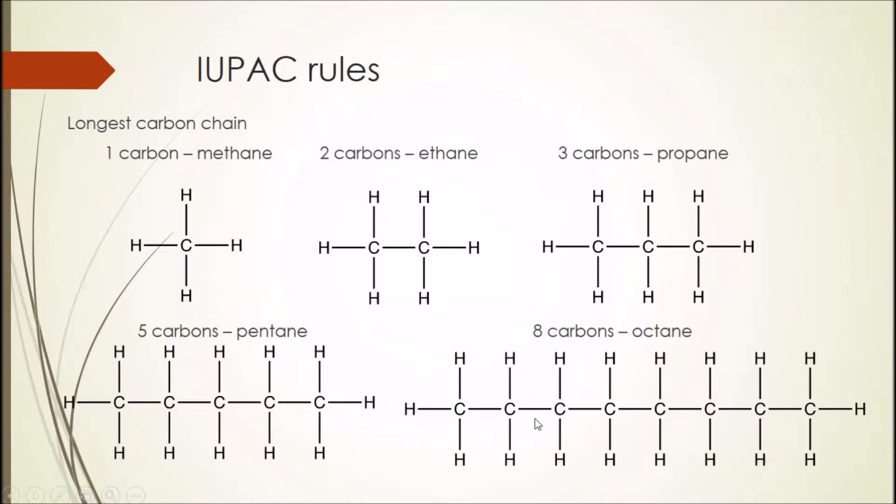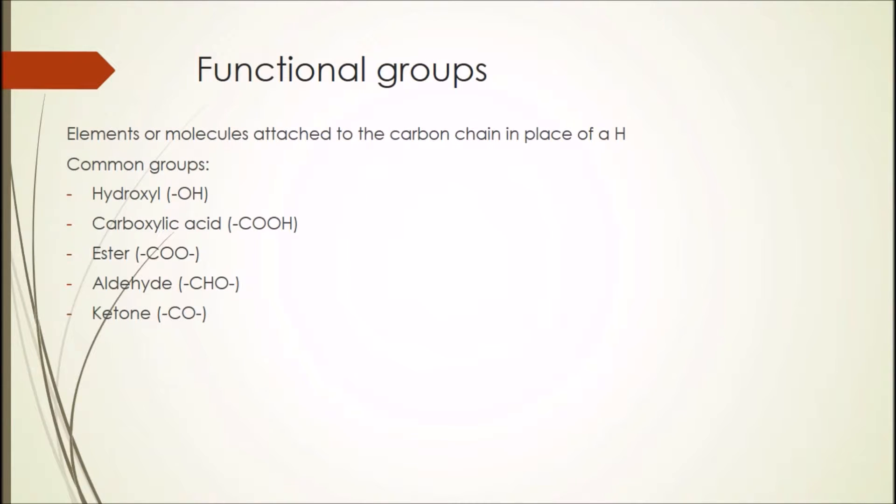Alternatively, if we take octane for example, we can establish that there are eight carbon atoms in the longest chain by the prefix oct, and the ane suffix tells us that the compound is an alkane hydrocarbon. And so now we can draw the compound out, octane. Functional groups can occur anywhere along the carbon chain in place of hydrogen. Here's a list of some common functional groups that you are likely to encounter frequently during your studies.